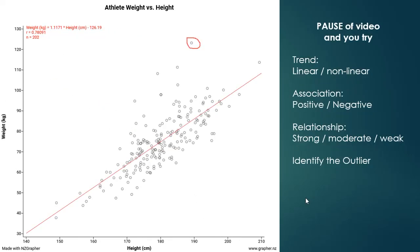Now pause the video and try to find the trend, association, and relationship, and identify the outlier for the next example.